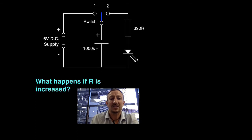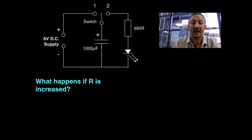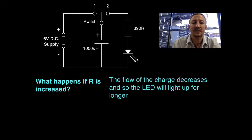Now what we've actually generated is an RC circuit there, where the resistor and the capacitor are working together. Now if we increase the resistor, the flow of charge will decrease because it's slower to get through, and so the LED will light up for longer. It's like going back to our water barrel scenario, whereas instead of having a large hole, we're actually going to make a very small hole.